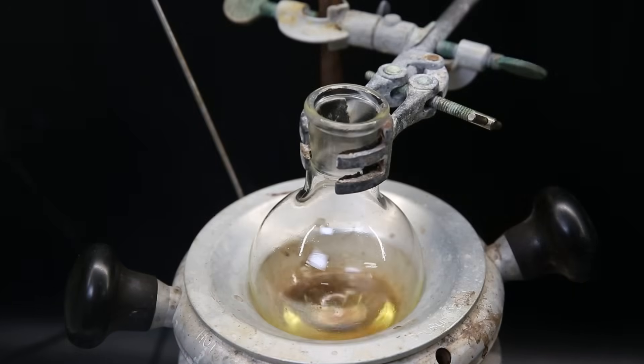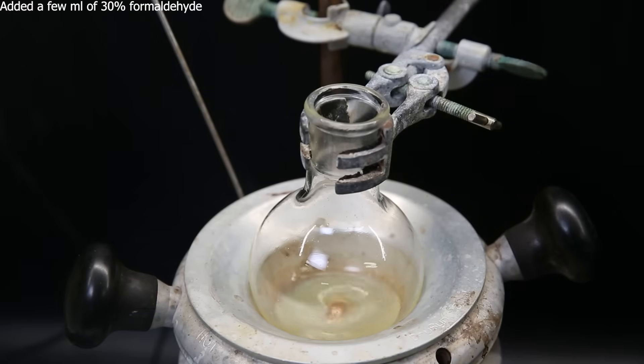When I come back, the mixture looks the same, but the reaction should be finished. Since there is an excess of Alpine borane, I will destroy it by adding a few mls of 30% formaldehyde and leave it to stir for an hour.